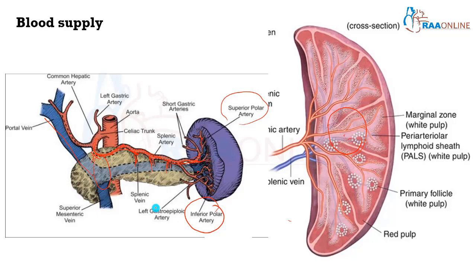Within the spleen, on a cross section, it contains two important areas: red pulp and white pulp. White pulp basically deals with the immunological functions performed by the spleen, whereas the red pulp contains cords and sinusoids — basically the blood vessels. The white pulp is located around the central artery and contains multiple follicles, and these follicles have what is called a germinal center. Within the follicles you have a large number of lymphocytes — basically the B lymphocytes — as well as macrophages.